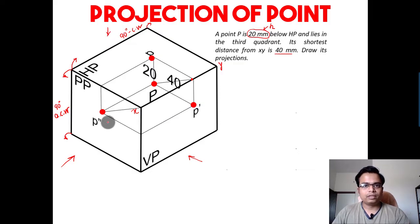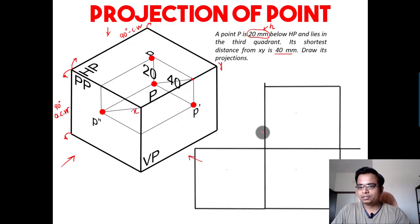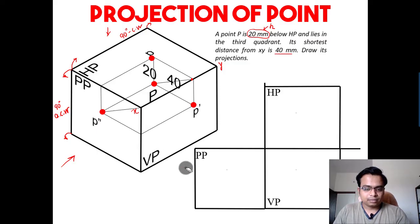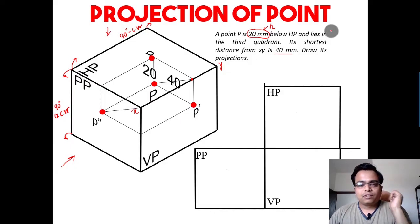And once you do that, all of these planes - HP, VP, and PP - all of them will become coplanar. They're gonna lie in one single plane itself, something of this sort: HP, VP, and PP done and dusted.